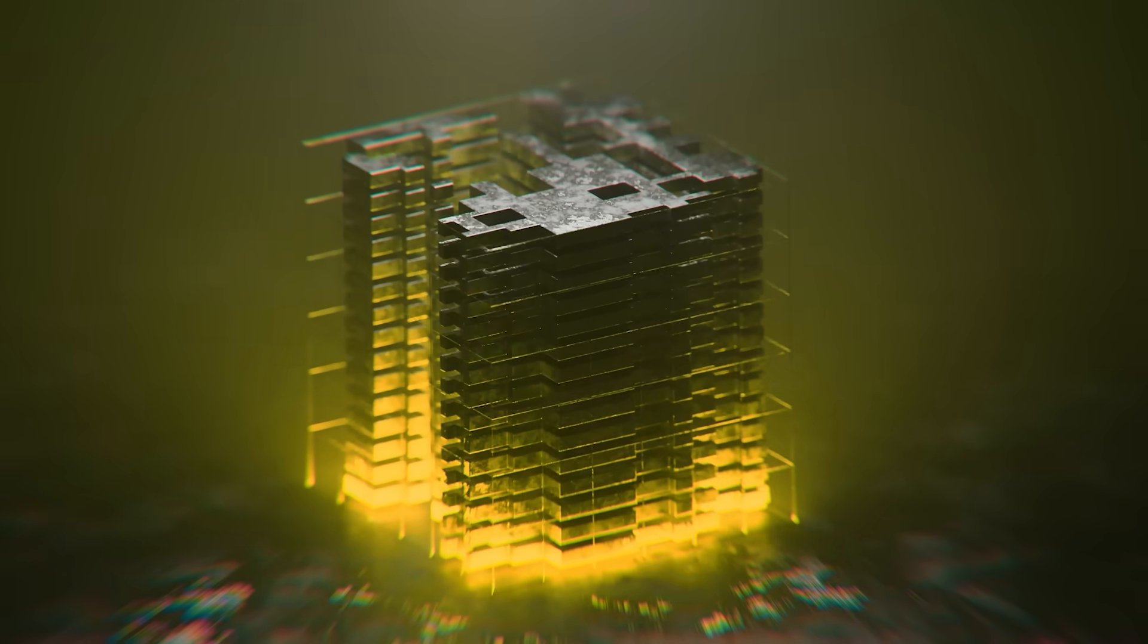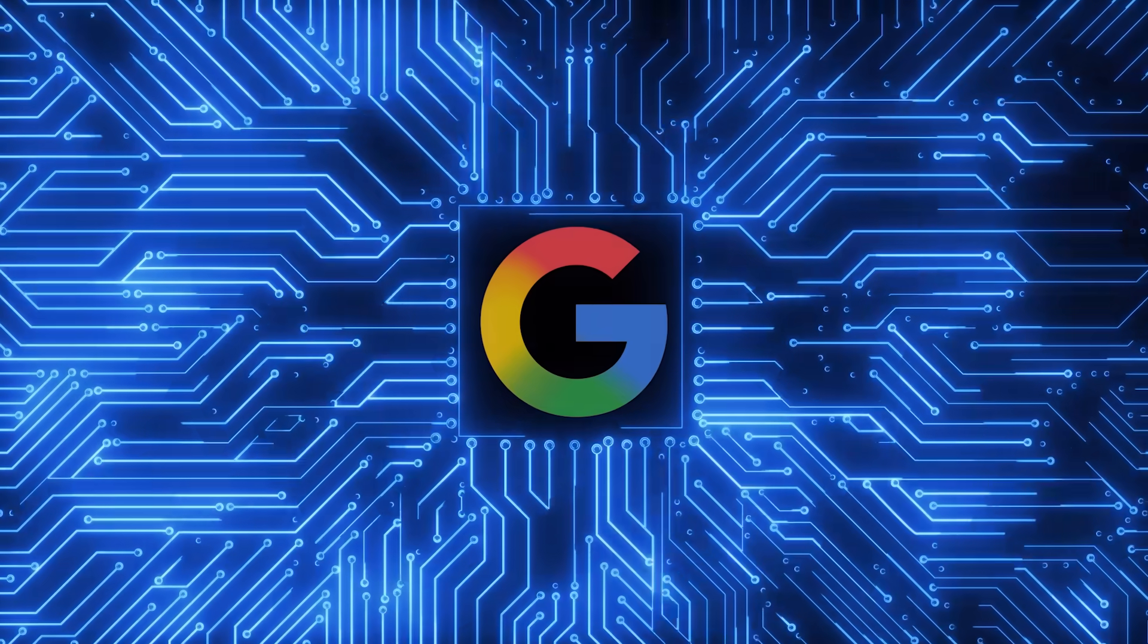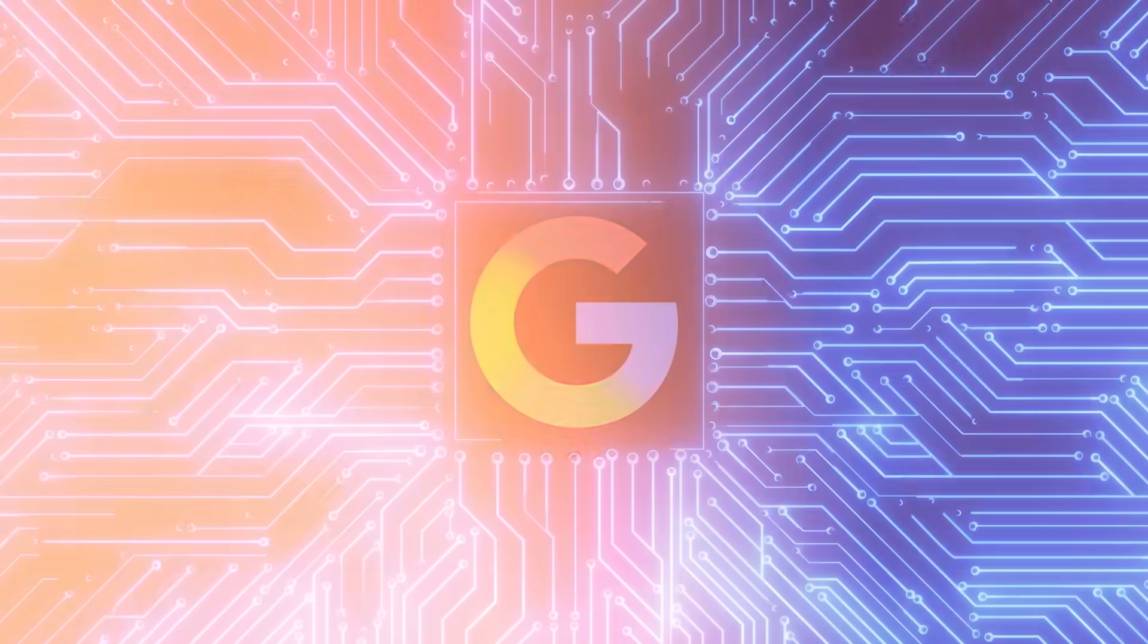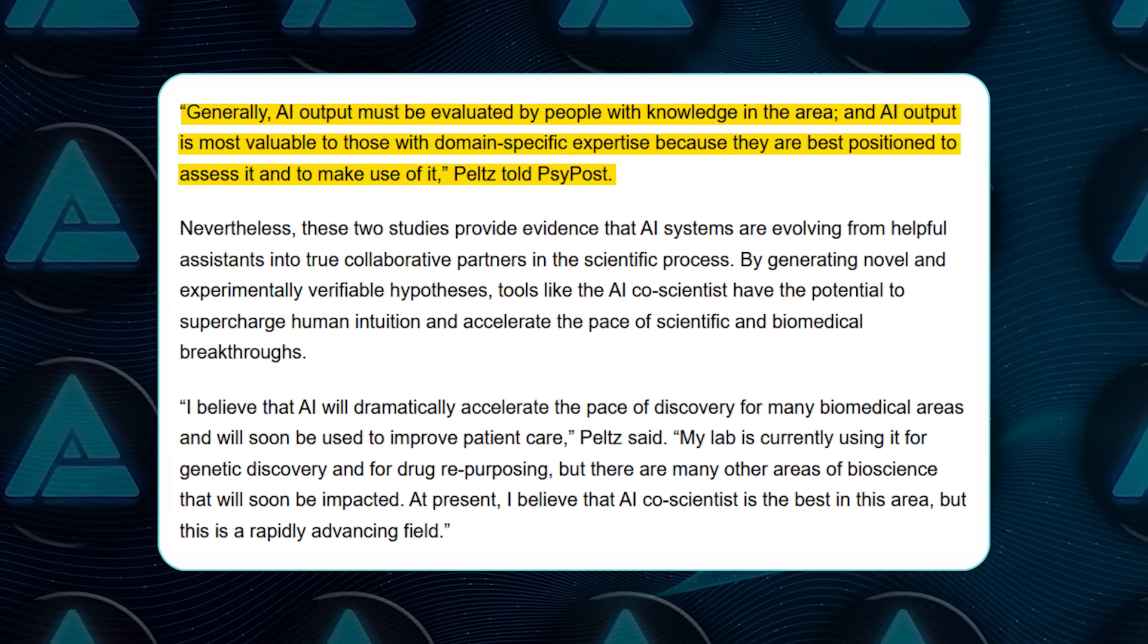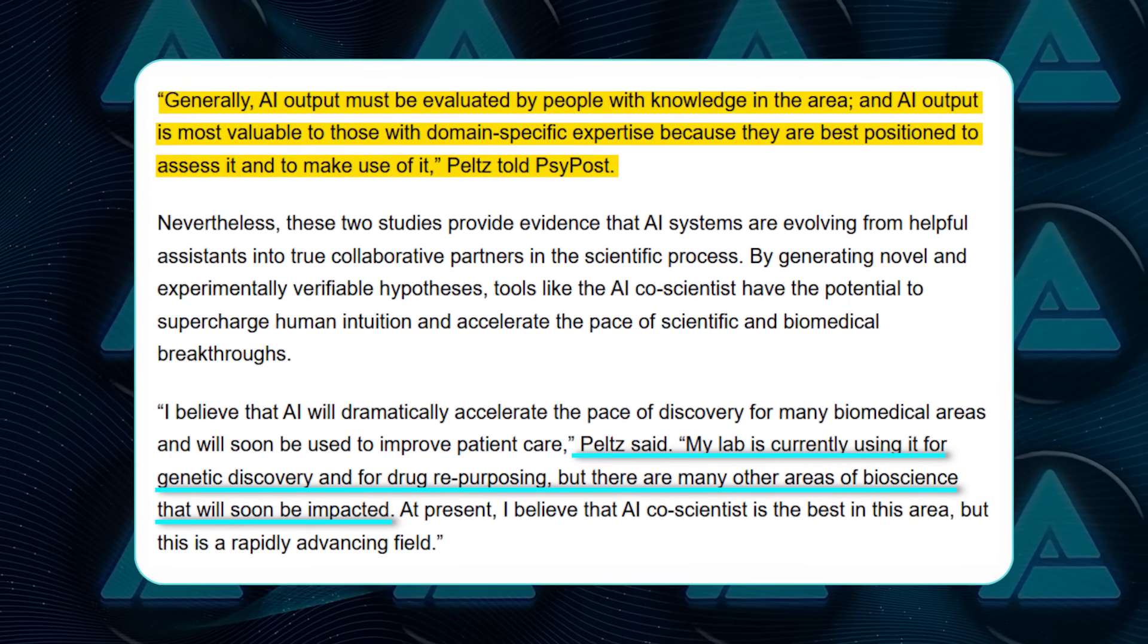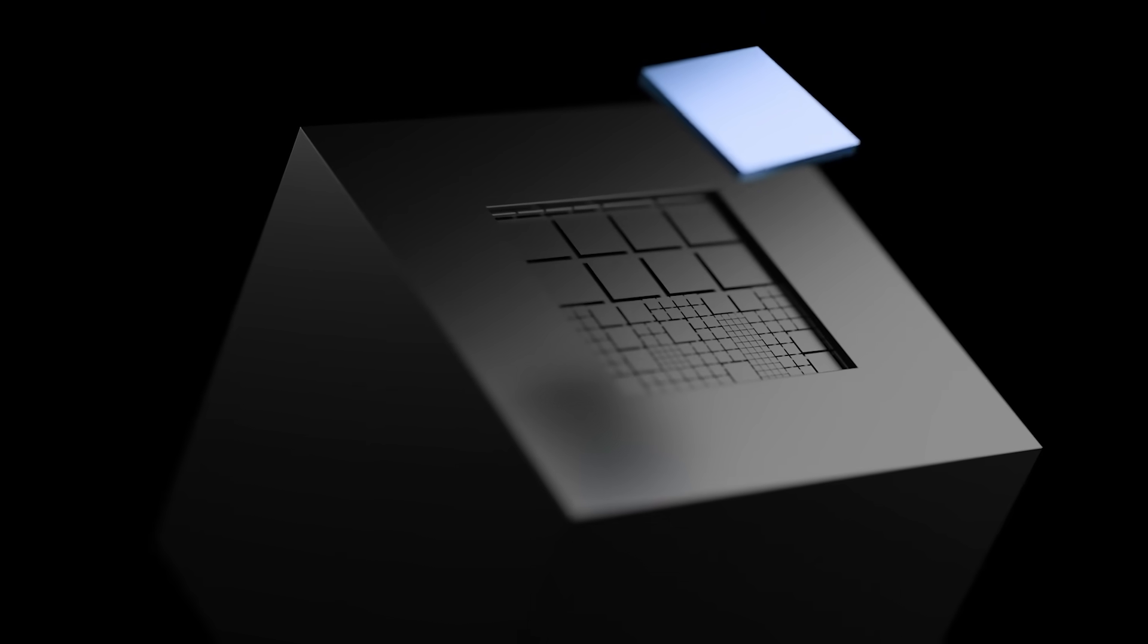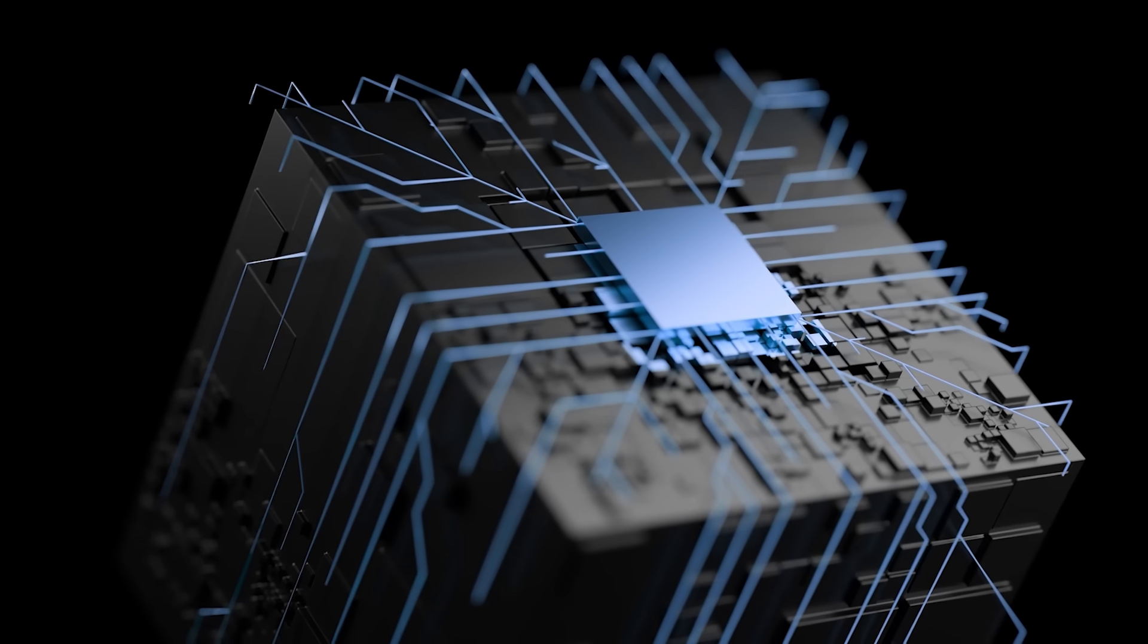The humans had spent 10 years uncovering. The AI got there in days. When benchmarked against other top AI models, none came close to reproducing that reasoning. Gemini 2.0's multi-agent setup was the only one that pieced it together. As Peltz put it, AI output still needs human evaluation. But the speed boost is unreal. His lab already uses it for genetic discovery and drug repurposing, and he believes systems like this will soon shape real patient care. Right now, he even calls Google's co-scientist the best in the field, though he admits it's evolving fast.